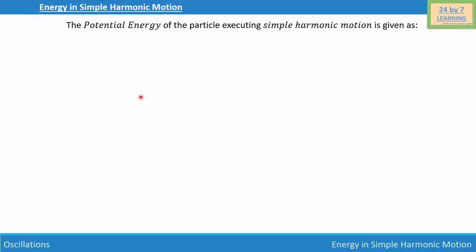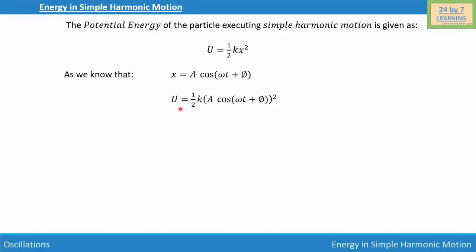Now let's find the potential energy. The potential energy of the particle executing simple harmonic motion is given as U = ½kx². The position of a particle in SHM is x = A cos(ωt + φ). Substituting this into the potential energy equation gives U = ½k(A cos(ωt + φ))².